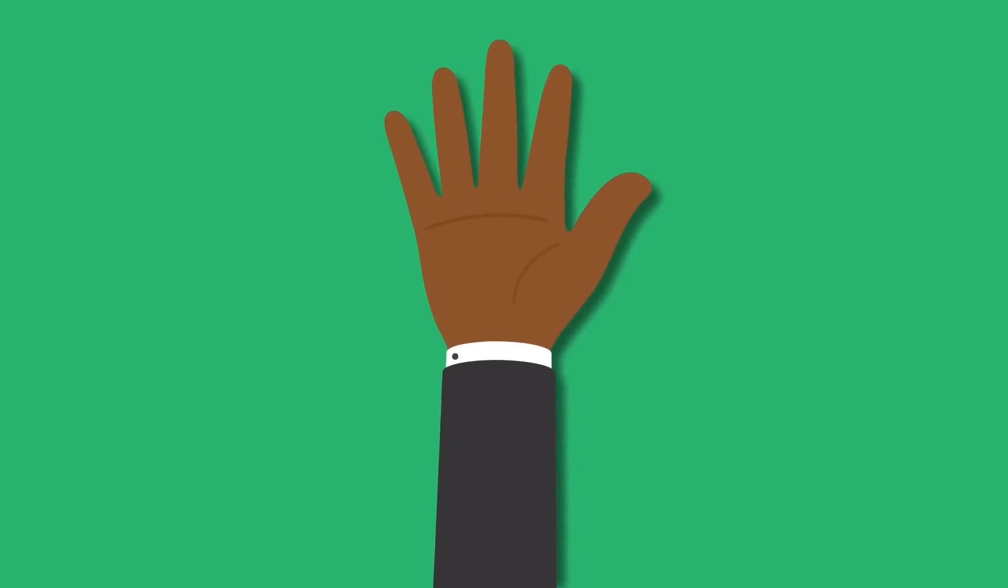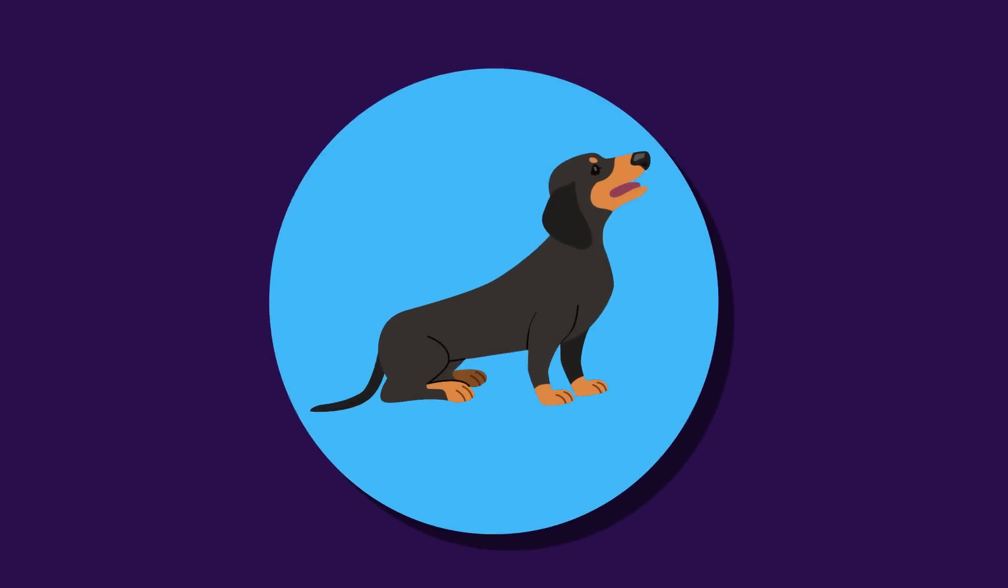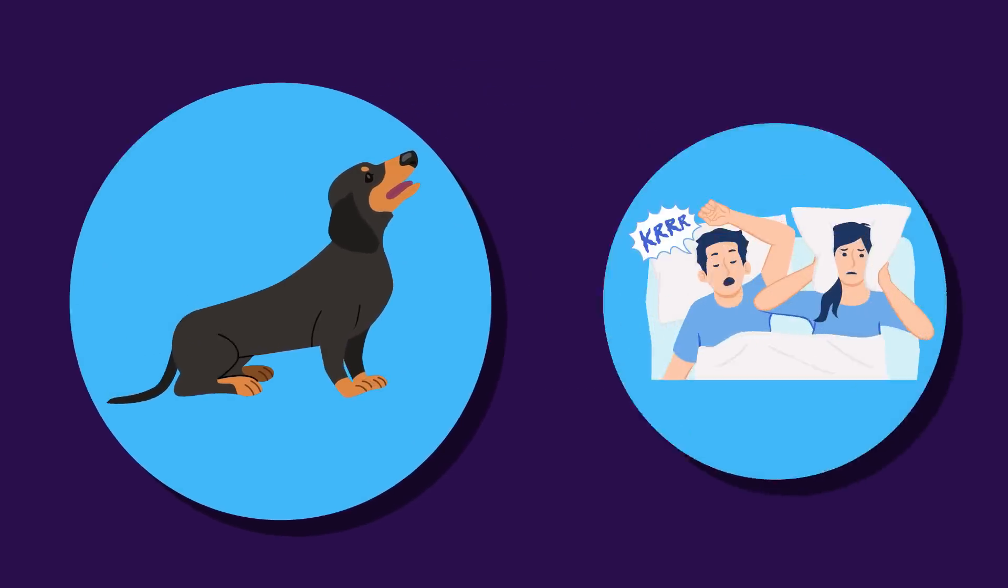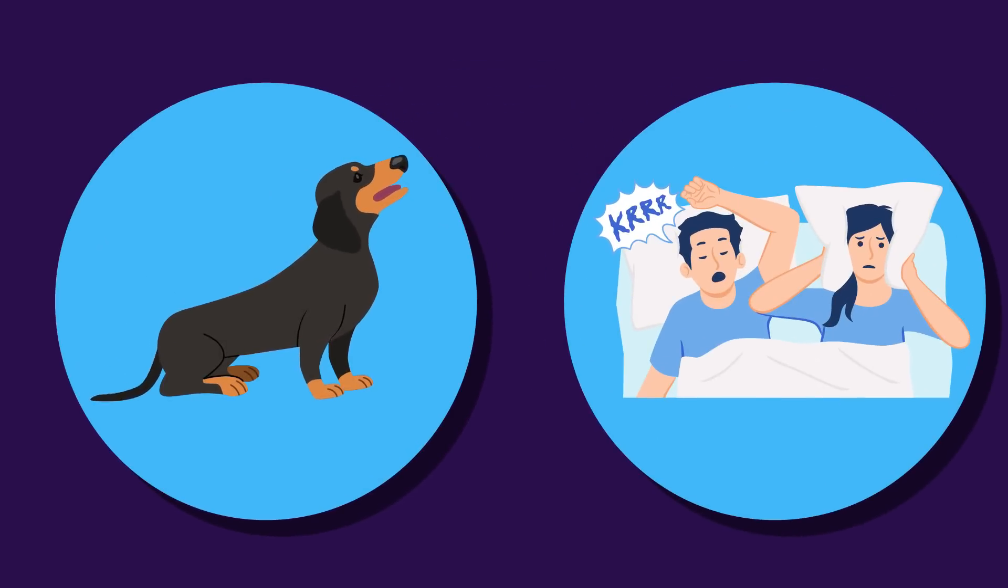For some people, this is an easy question to answer. Maybe your neighbor's dog barks through the night. Perhaps your partner snores louder than a boat horn. While frustrating, environmental disruptions can explain a significant percentage of irregular sleep cycles.